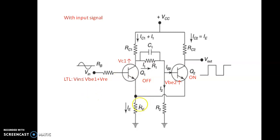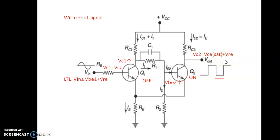Then Q2 is driven into saturation and Q1 is driven into cut-off. At this instant, the collector voltage of Q1 will be VCC and the collector voltage of Q2 will be VCE(sat) plus VRE, because transistor Q2 is now in the on condition. Hence we obtain the conversion at this point.